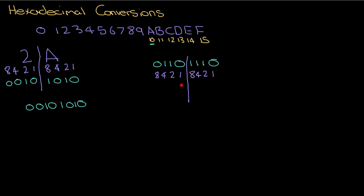Then I ask myself: for the first nibble, I've got 4 plus 2, which equals 6. Nice and easy — because that's below 10, so that's just hexadecimal 6. For the second nibble, I've got 8 plus 4 plus 2, which equals 14. Looking at my reference chart, that equals E. So the binary number here is actually hexadecimal 6E.